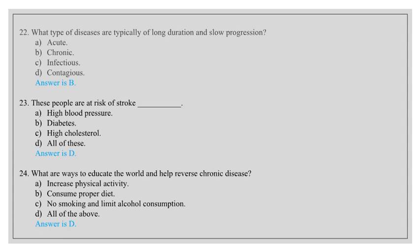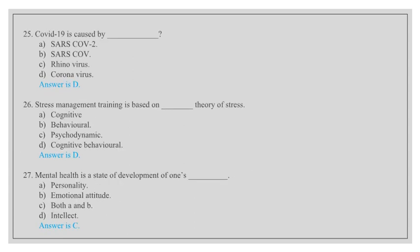What are ways to educate the world and help reverse chronic disease? Increase physical activity, consume proper diet, no smoking and limit alcohol consumption, all of the above. Answer is D, all of the above. COVID-19 is caused by SARS-CoV-2, rhino-virus, coronavirus. Answer is D, coronavirus.